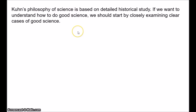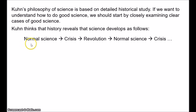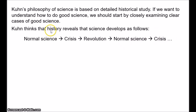With all of that said, Kuhn believed that the history of science supported a kind of cyclical model of scientific change, which goes like this: normal science leading to crisis, leading to revolution, leading to normal science, leading to crisis, to revolution, and so on. We have this cycle of normal science, crisis, revolution, normal science.